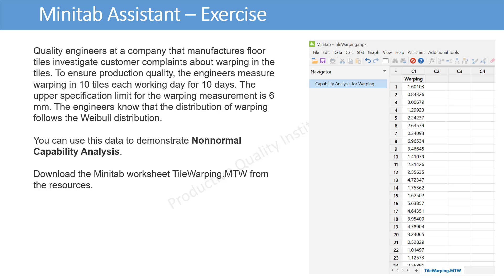Now we will perform an exercise for the capability analysis using Minitab Assistant. Quality engineers at a company that manufactures floor tiles investigate customer complaints about warping in the tiles. To ensure production quality, the engineers measure warping in 10 tiles each working day for 10 days. The upper specification limit for the warping measurement is 6 mm. The engineers know that the distribution of warping follows the Weibull distribution. You can use this data to demonstrate non-normal capability analysis. Please download the Minitab worksheet tilewarping.mtw from the resources.